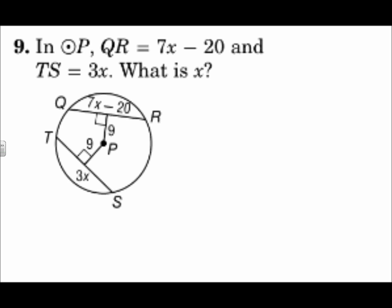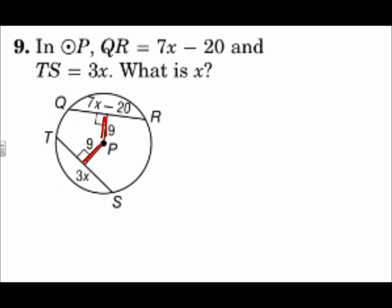In circle P, QR equals 7x minus 20 and TS equals 3x. Notice these two distances from the center to the chord are congruent — they're both the same. When that distance is the same, all the related pieces are the same as well. You could say if the chords are congruent then the distance from the center to the chord is congruent, or vice versa: if the distance from the center to the chord is congruent, then the chords are congruent. So if the two distances are the same, then the chords are the same.